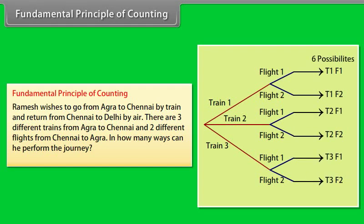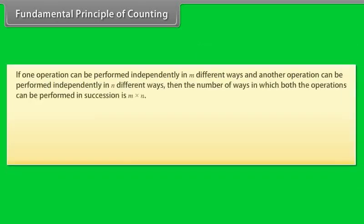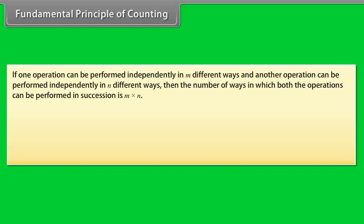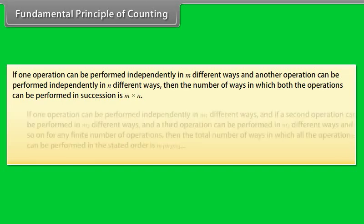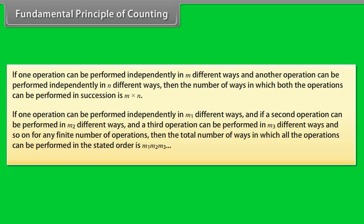He can perform the journey in three into two ways, that is six ways. The fundamental principle of counting states: if one operation can be performed independently in m different ways and another operation can be performed independently in n different ways, then the number of ways in which both operations can be performed in succession is m into n. For any finite number of operations, the total number of ways is m1 into m2 into m3 and so on.